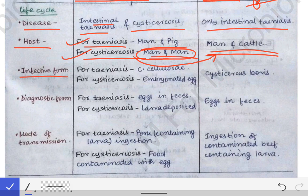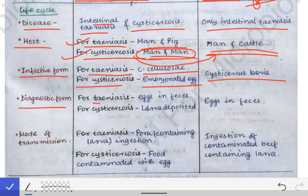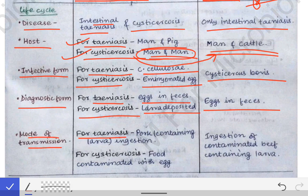The infective form for taeniasis due to Taenia solium is Cysticercus cellulosae; for Taenia saginata it is Cysticercus bovis. For cysticercosis, the infective form is the embryonated egg produced in the human intestine. The diagnostic form for taeniasis is eggs in feces; for cysticercosis it is larva deposited in skeletal muscle. For Taenia saginata, eggs in feces are also the diagnostic form.